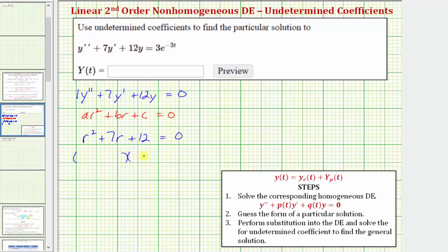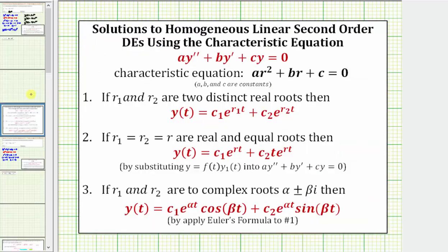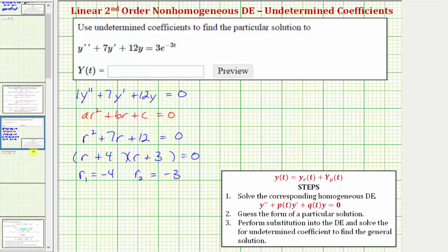We can solve this by factoring. The factors of r squared are r and r, and the factors of 12 that add to seven are positive four and positive three. Notice how we have two distinct real solutions: r sub one equals negative four and r sub two equals negative three. When the characteristic equation has two distinct real roots, the complementary function y sub c of t equals c sub one times e raised to the power of negative 4t plus c sub two times e raised to the power of negative 3t.